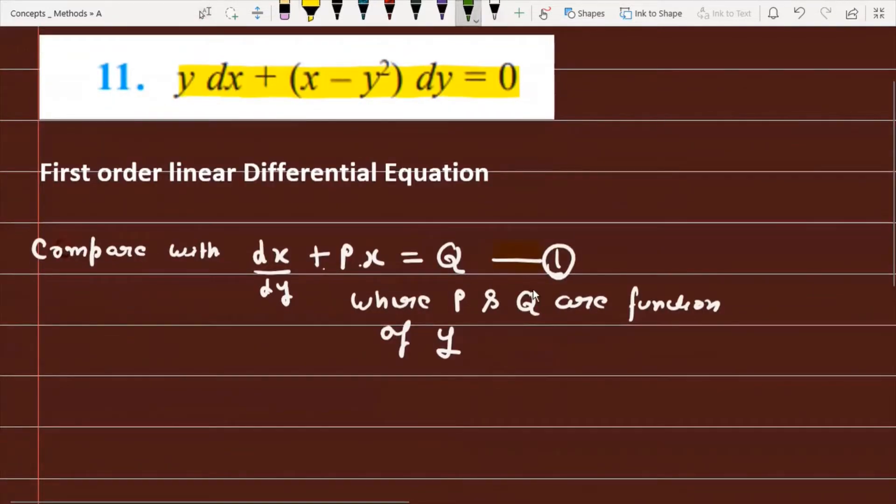First, I will write down the question: y dx + (x - y²)dy = 0. So what are we doing?